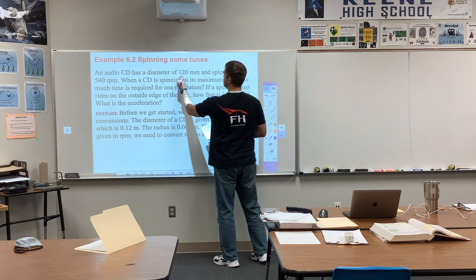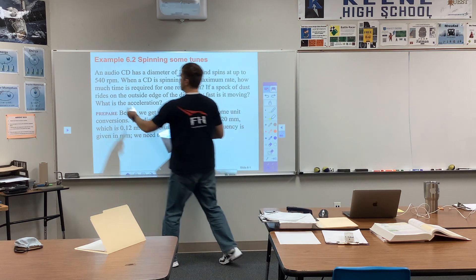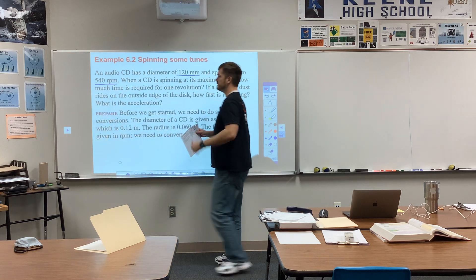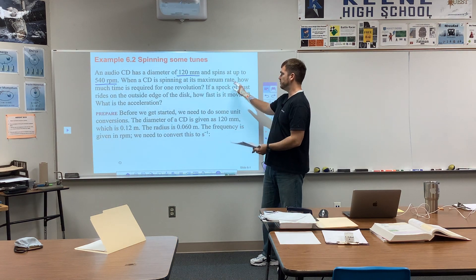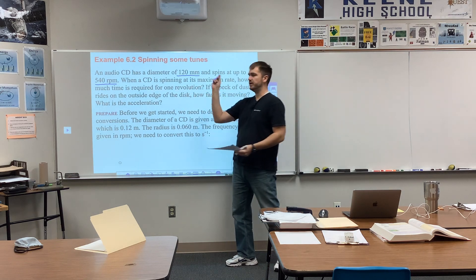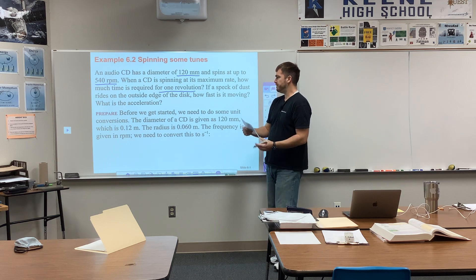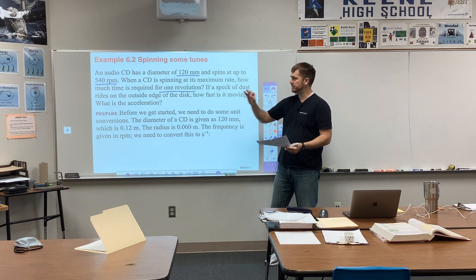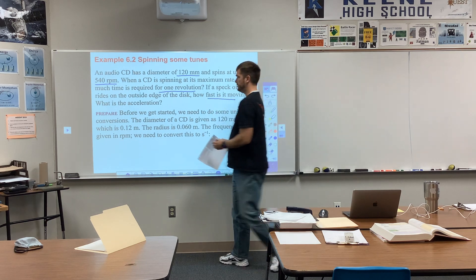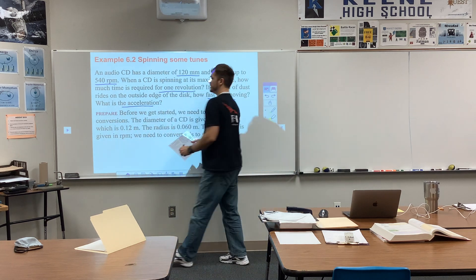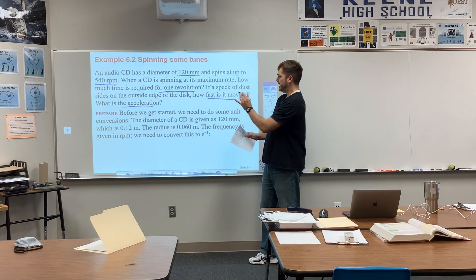This problem says: an audio CD has a diameter of 120 millimeters and spins at up to 540 rpm — that's revolutions per minute. When a CD is spinning at its maximum rate, how much time is required for one revolution? Then, if a speck of dust rides along the outside edge, how fast is it moving and what is the acceleration?